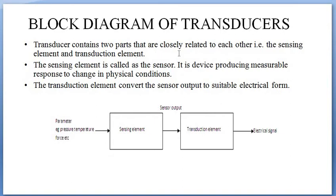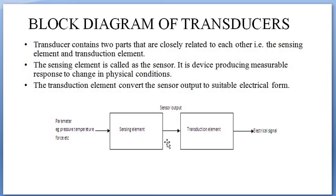A transducer contains two parts that are closely related to each other. One is the sensor — the sensing element — which senses the physical quantity input. The two parts closely related to each other are the sensing element and the transduction element. The sensing element, also called the sensor, is a device producing a measurable response to a change in physical conditions.